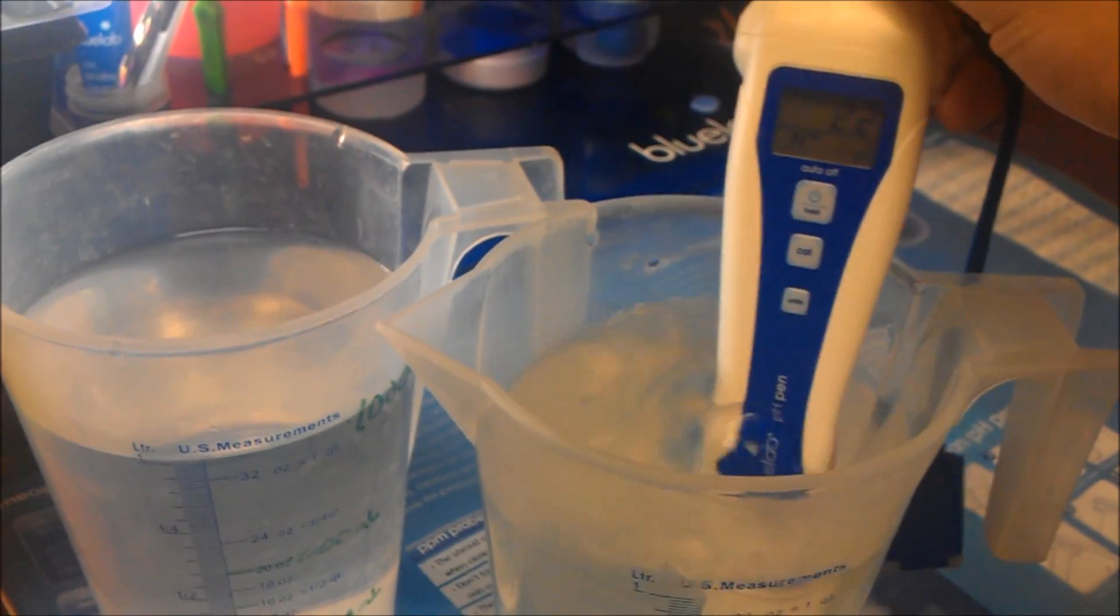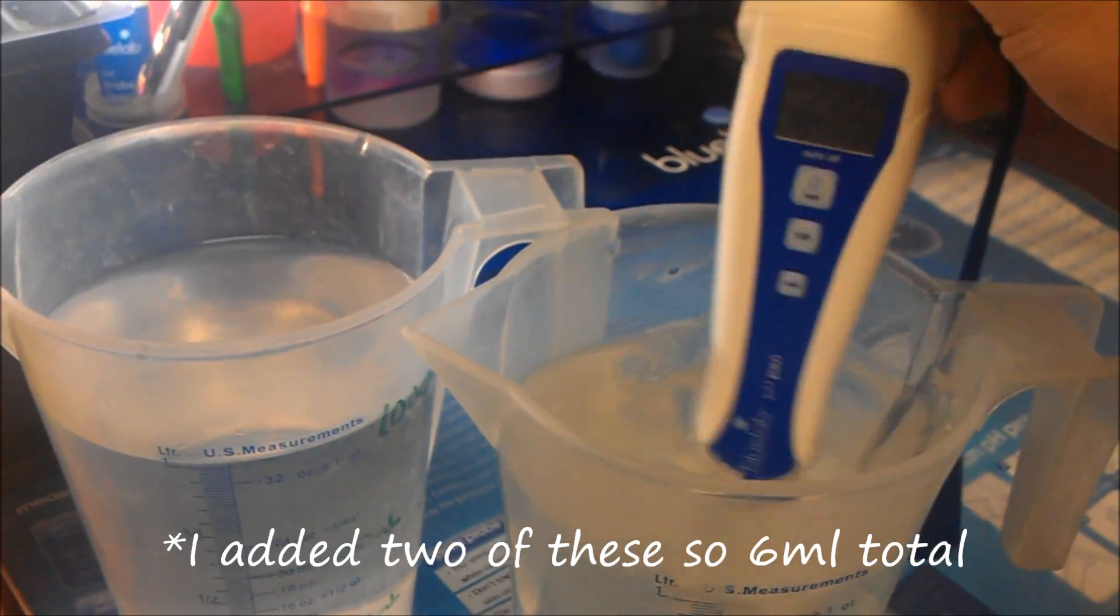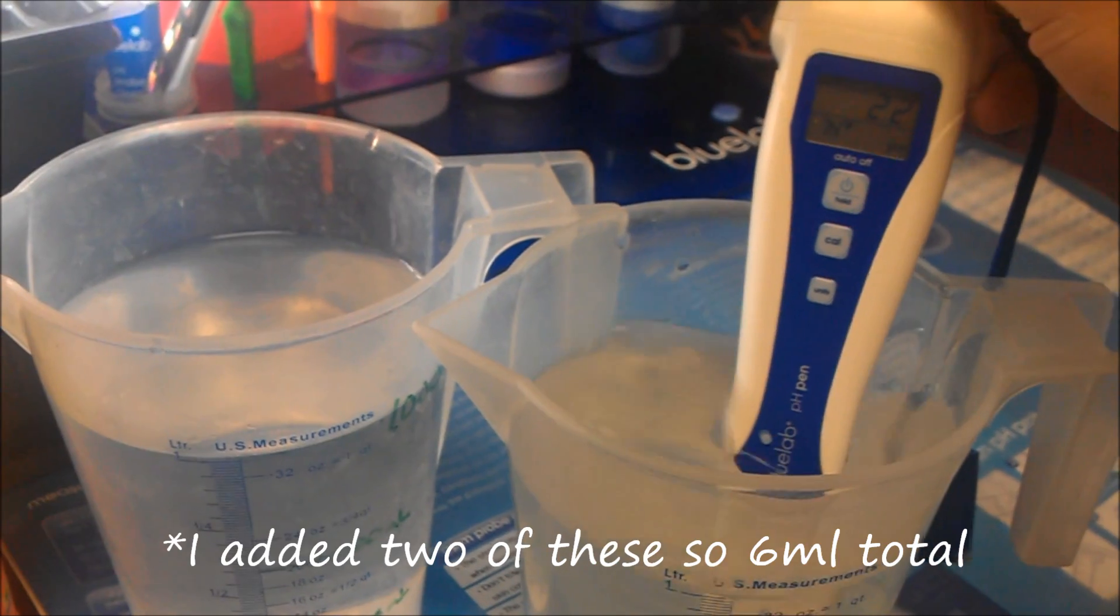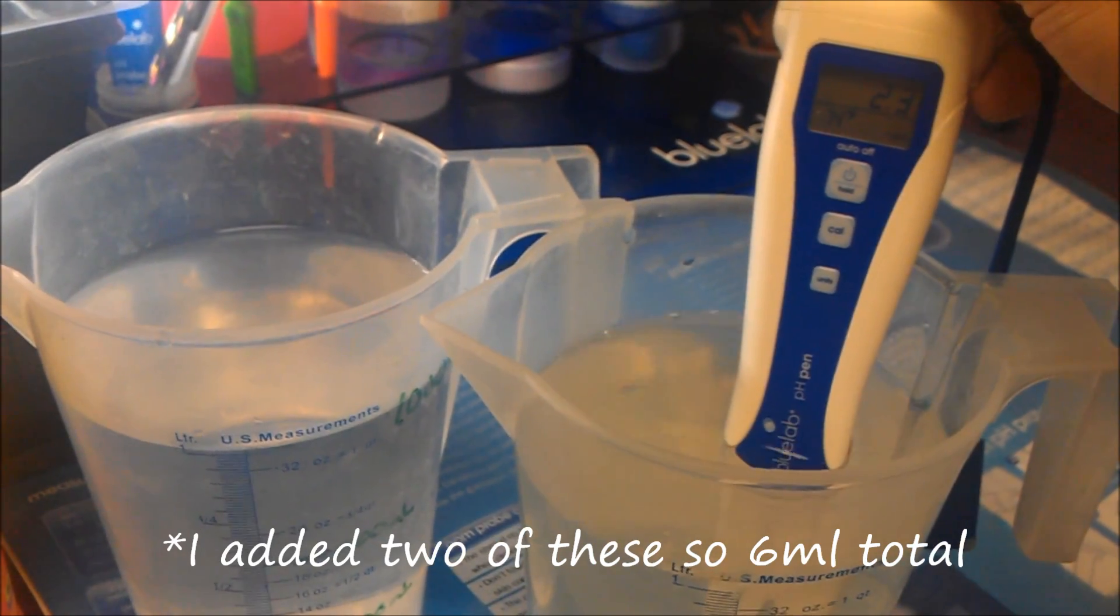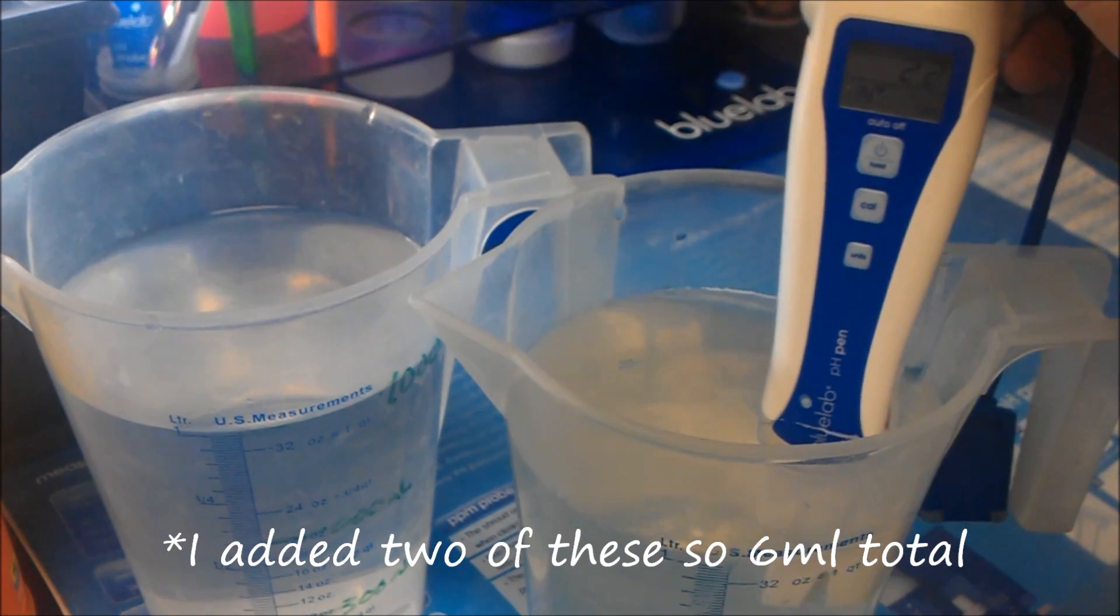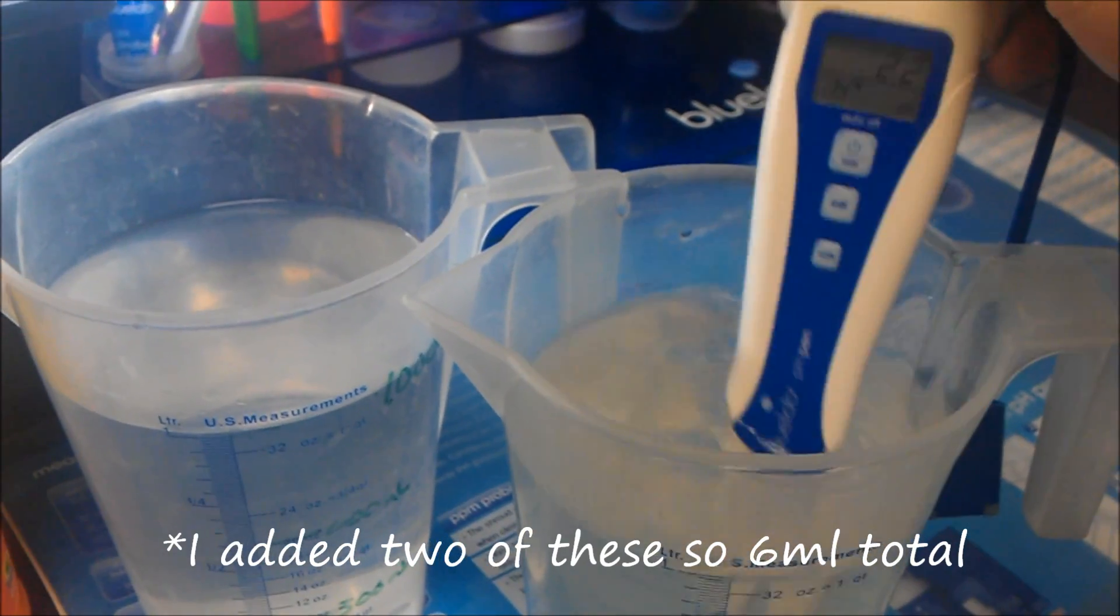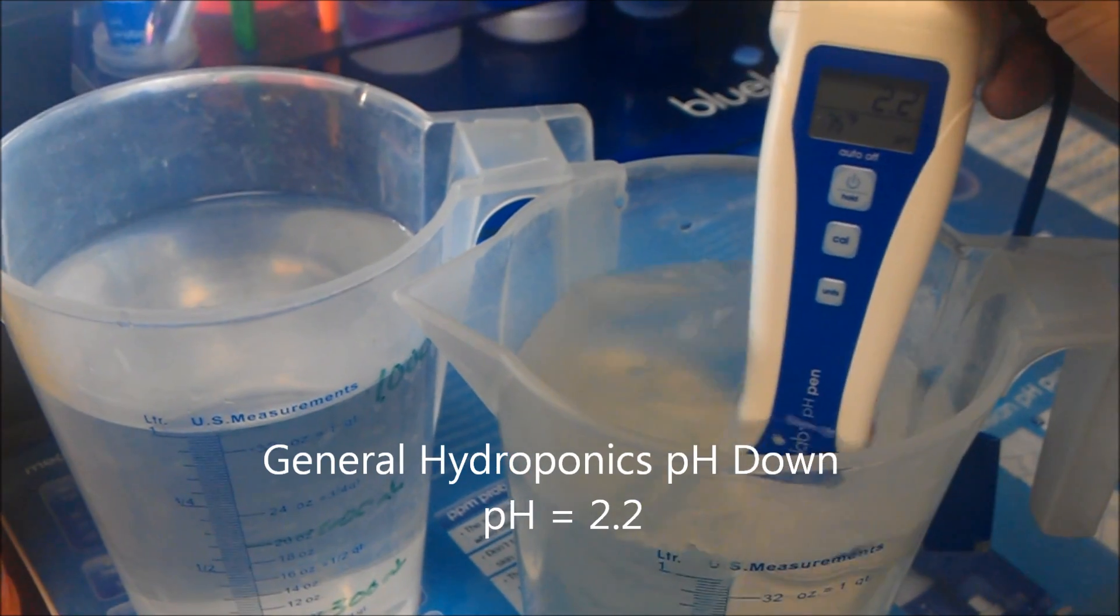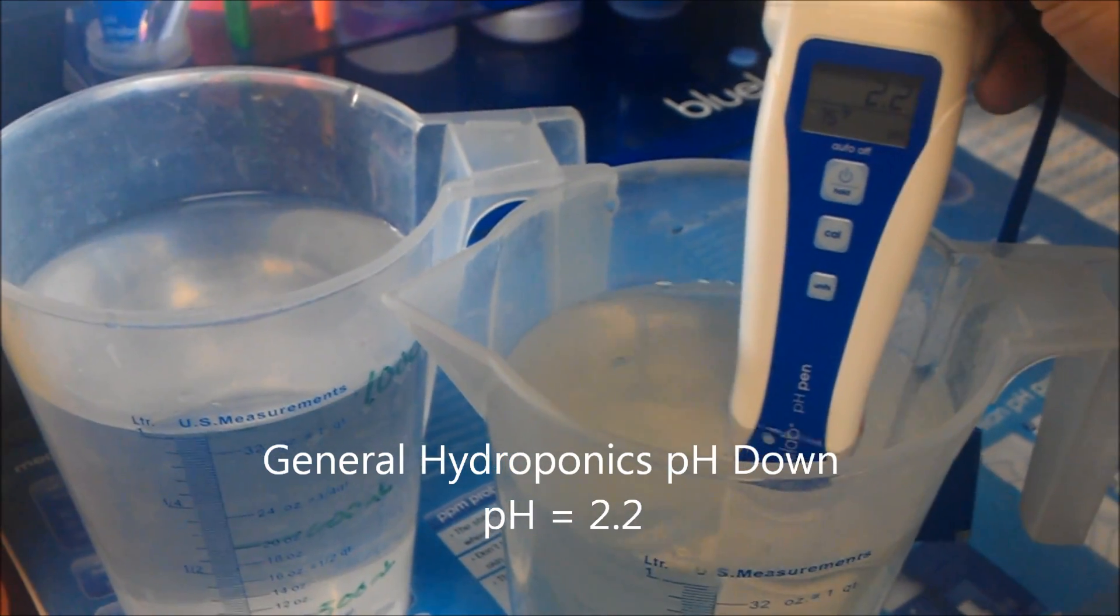Okay, so this is after adding 3ml of General Hydroponics into the 1000ml of water. It brought it down to 2.2 pH, and I've let it sit here for about 5-6 minutes.